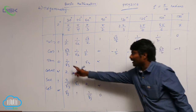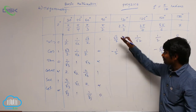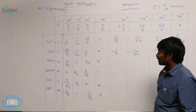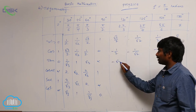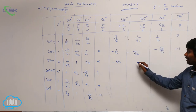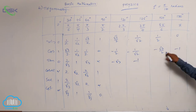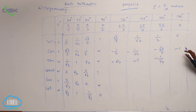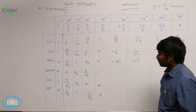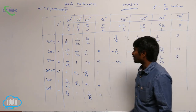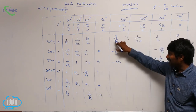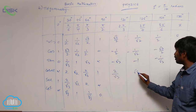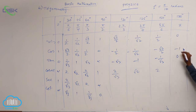Tan equals sin by cos. For the respective values: root 3 by 2 divided by minus 1 by 2 gives minus root 3; then minus 1; then minus 1 by root 3; and 0. Cosecant is reciprocal of sin, so the values are 2 by root 3, root 2, 2, and 1 by 0 which is undefined.